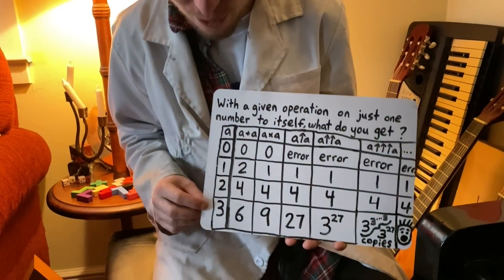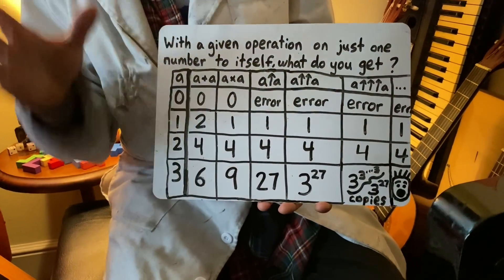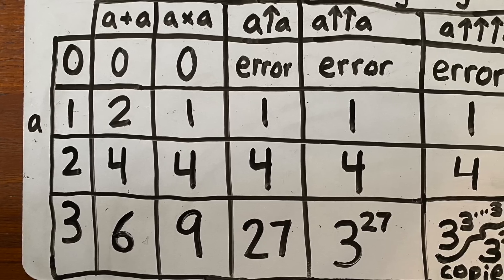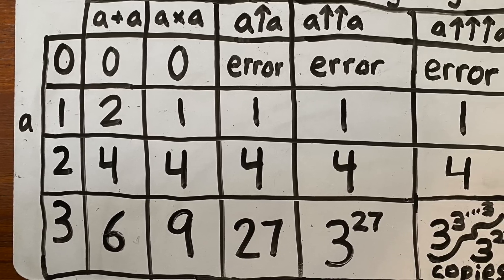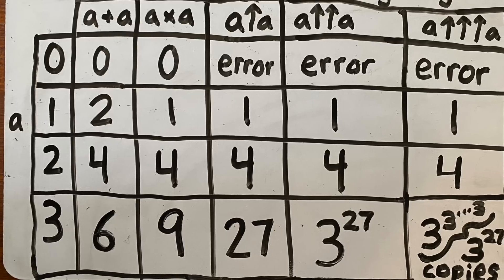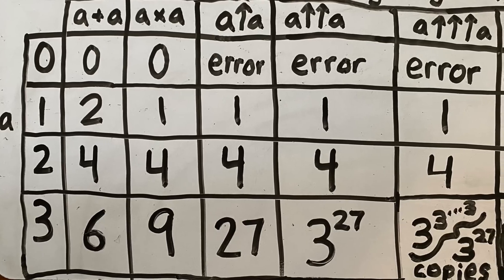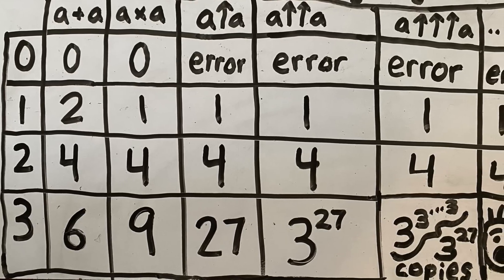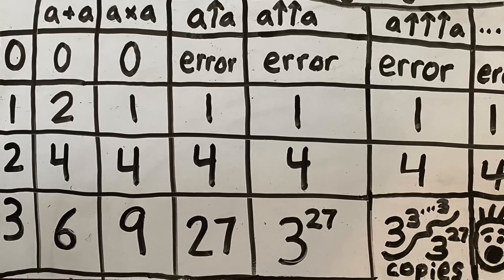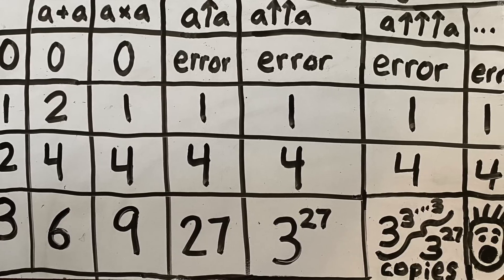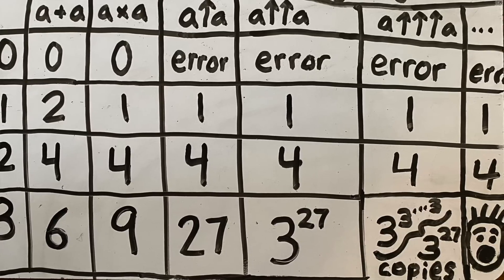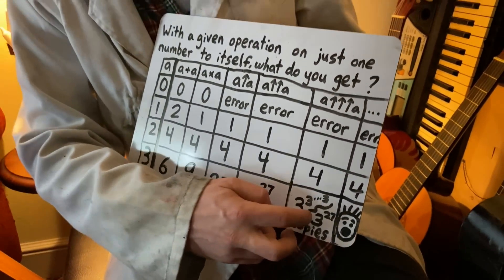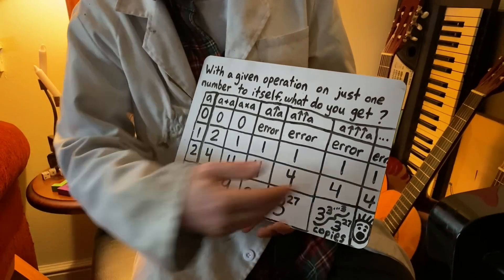And three can grow pretty massive. Three plus three is six, times three is nine, three to the third power is 27. Three tetrated to three means three to the 27th power when you break it down, and we'll see in a minute how massive that is. Three pentated to three would be a tower of three to the power of three to the power of threes the size of three to the 27th power amount of threes, and past that would just be insane.